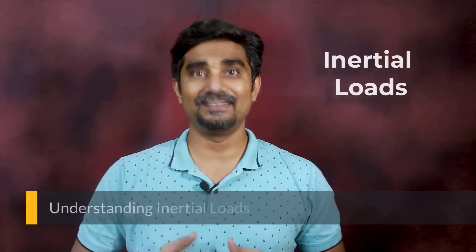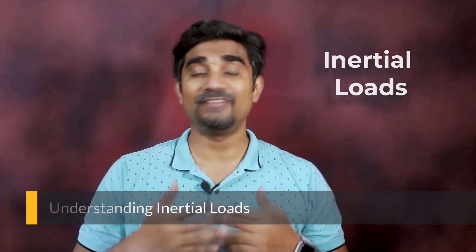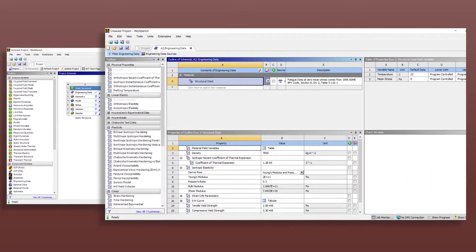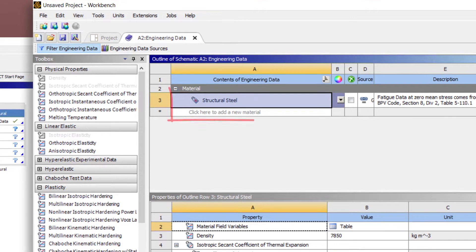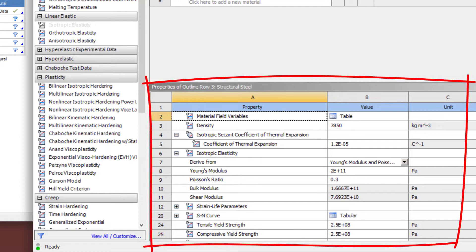The material selection and definition of its properties is the first step of any finite element analysis. For a static structural analysis on the workbench project page, we have a default material of structural steel already defined under engineering data, and it has the necessary material parameters defined for us to carry out the stress analysis.